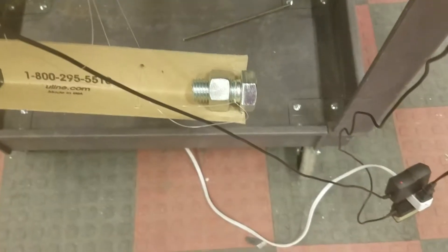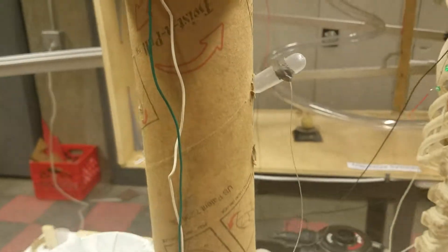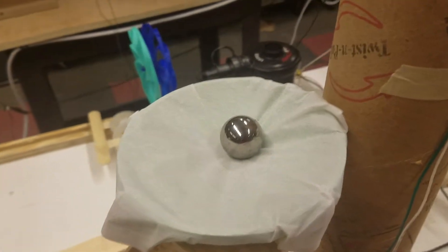Once this metal object falls it will squeeze this dropper, releasing water onto this tissue paper. From there the tissue will tear and the ball will roll down this ramp and hit this heavy metal object.